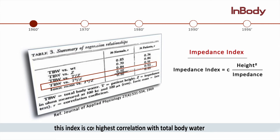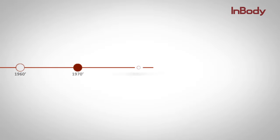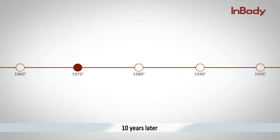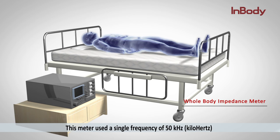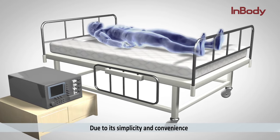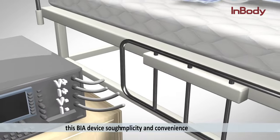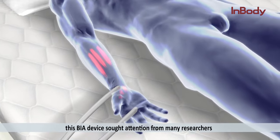This index is considered the starting foundation of BIA devices. Ten years later, an American company commercialized the first impedance meter. This meter used a single frequency of 50 kilohertz and measured the body's impedance. Due to its simplicity and convenience, this BIA device attracted attention from many researchers.